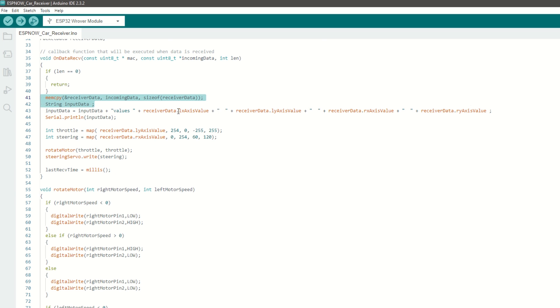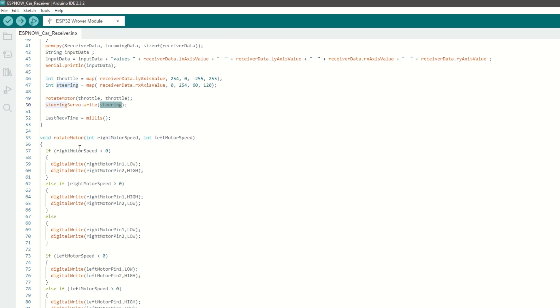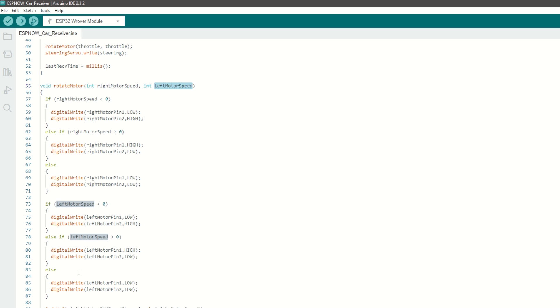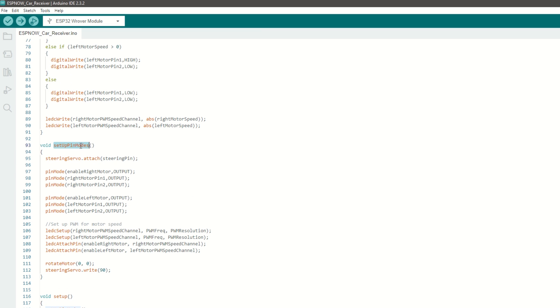Left joystick value is for throttle and right joystick value is for steering control. We will move the car forward or backward using rotate motor function and throttle value. Also we will steer the car using servo motor. We have created rotate motor function which takes right and left motor speed as arguments. It will rotate motor in forward or backward direction. We have created setup pin mode function to attach the servo pin.